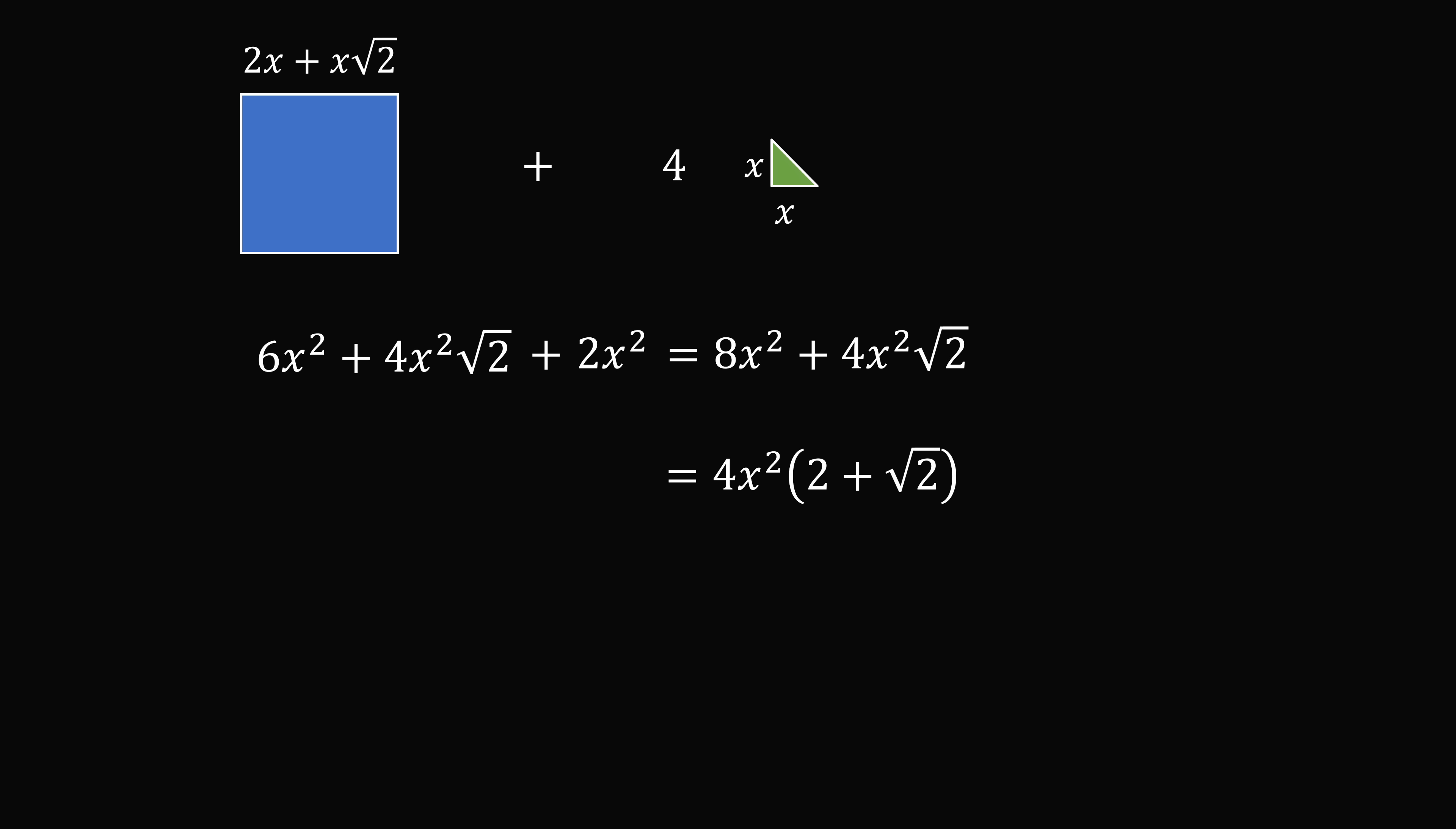Now we want to write this answer with x squared on the right side of the parentheses. So this is equal to 4 multiplied by the term 2 plus root 2 multiplied by x squared. And that is the answer in the form that they've requested it.